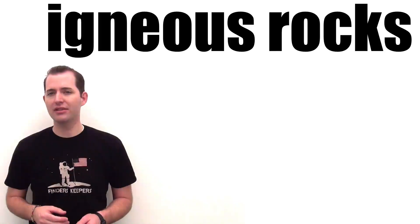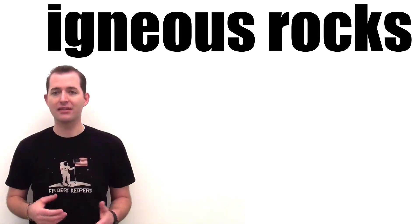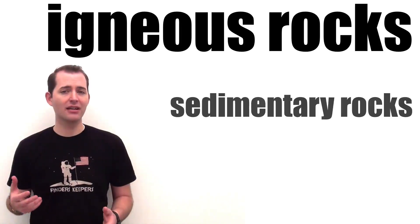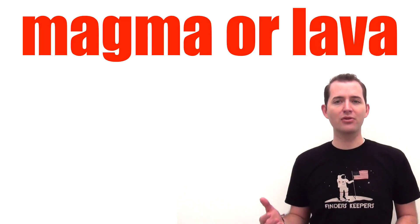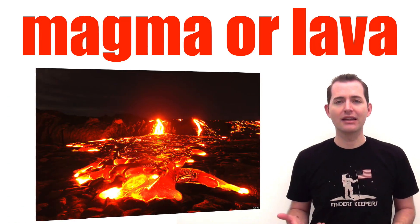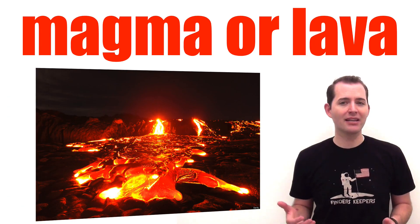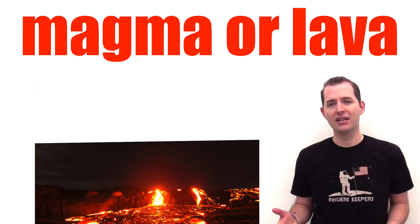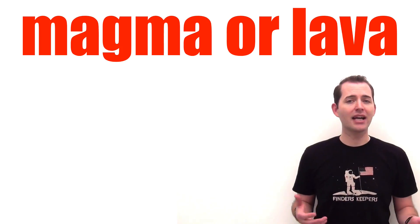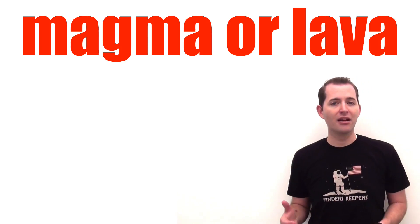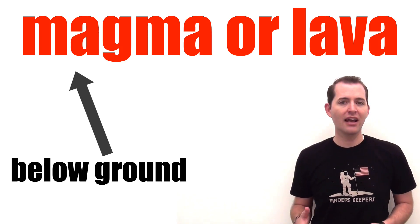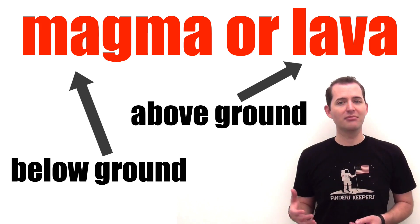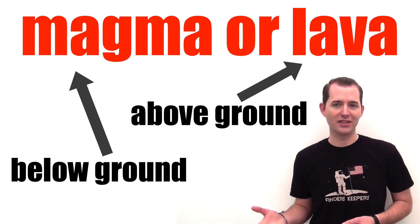Igneous rocks are one of the three major rock types. The other types are sedimentary and metamorphic rocks. Igneous rocks form from cooling magma or lava. This brings about a key distinction: the difference between magma and lava. Magma is below the surface of the earth, and lava is above the surface of the earth.